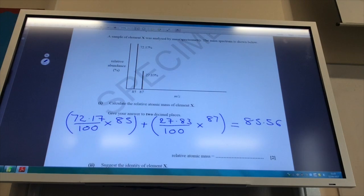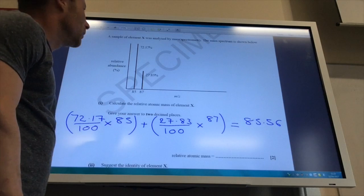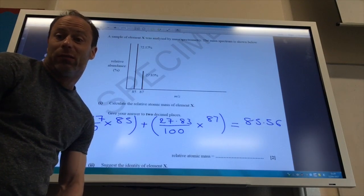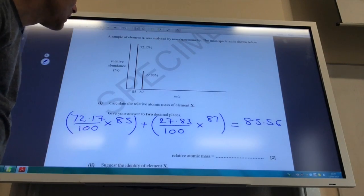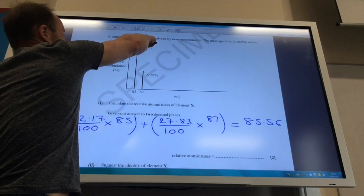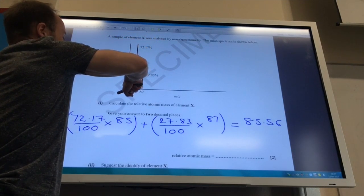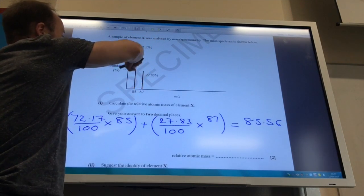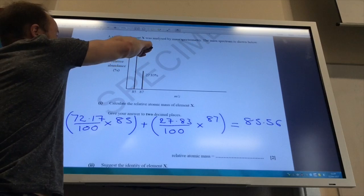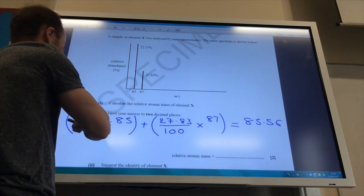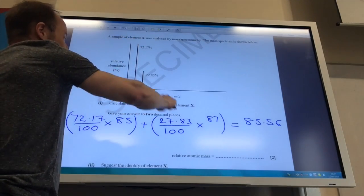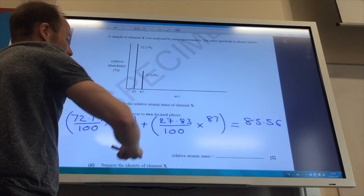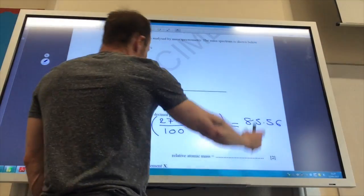Alright, so one for the calculators, pretty straightforward though. You've just got to read the data off the mass spectrum and work out the relative atomic mass. So the way you do it is you times the percentage abundance by the M over Z value which is 85. So 72.17 over 100 times 85, 27.83 over 100 times 87. Add them together and you'll get this.